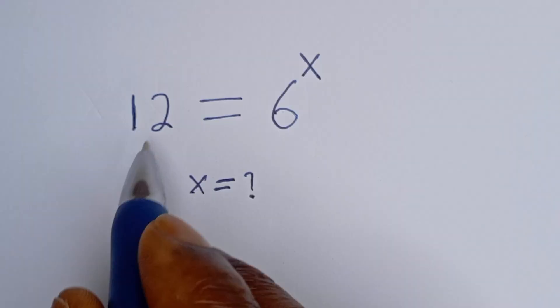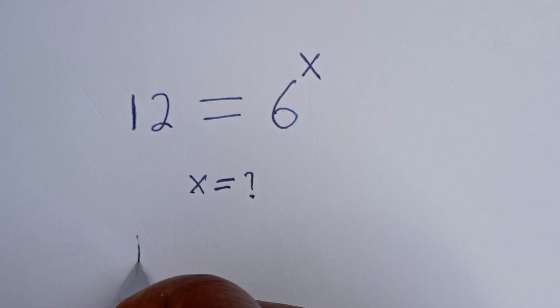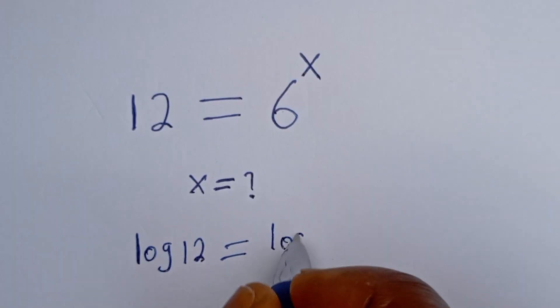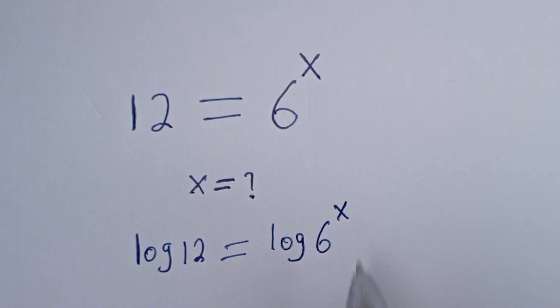From here we can take the log of both sides. We have log 12 is equal to log 6 to the power of x.